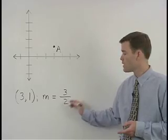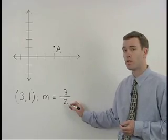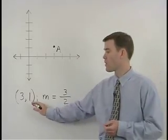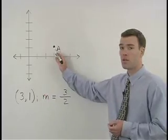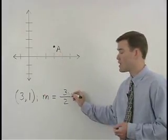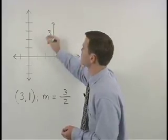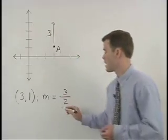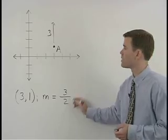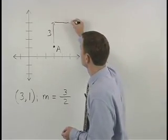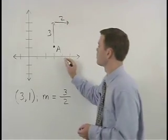Remember that slope means rise over run. So from our original point that we've already plotted, we rise 3 units (1, 2, 3) and run 2 units (1, 2).